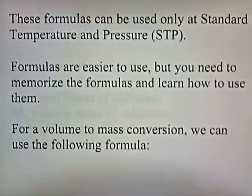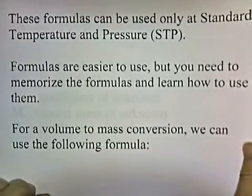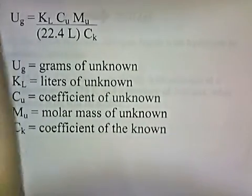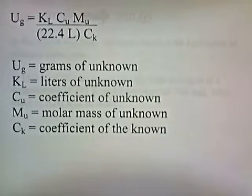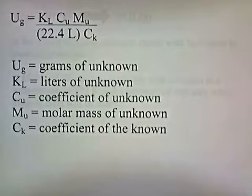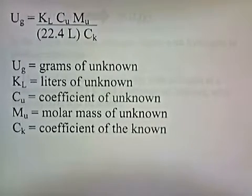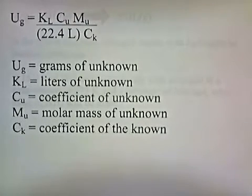For a volume to mass conversion, we use the following formula: UG equals KL times CU times MU, divided by 22.4 liters times CK. UG is grams of unknown, KL is liters of known, CU is the coefficient of the unknown, MU is the molar mass of the unknown, and CK is the coefficient of the known.